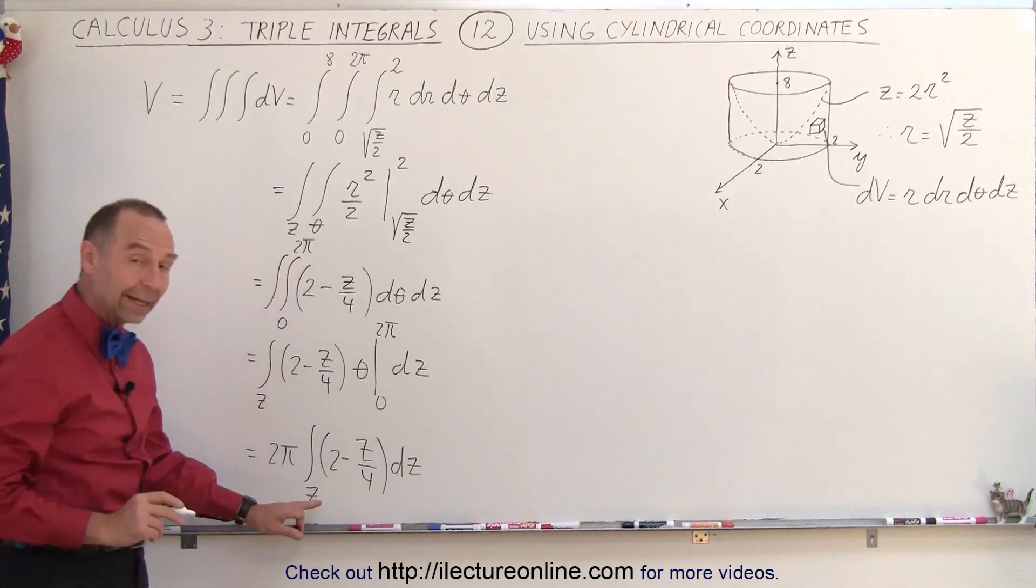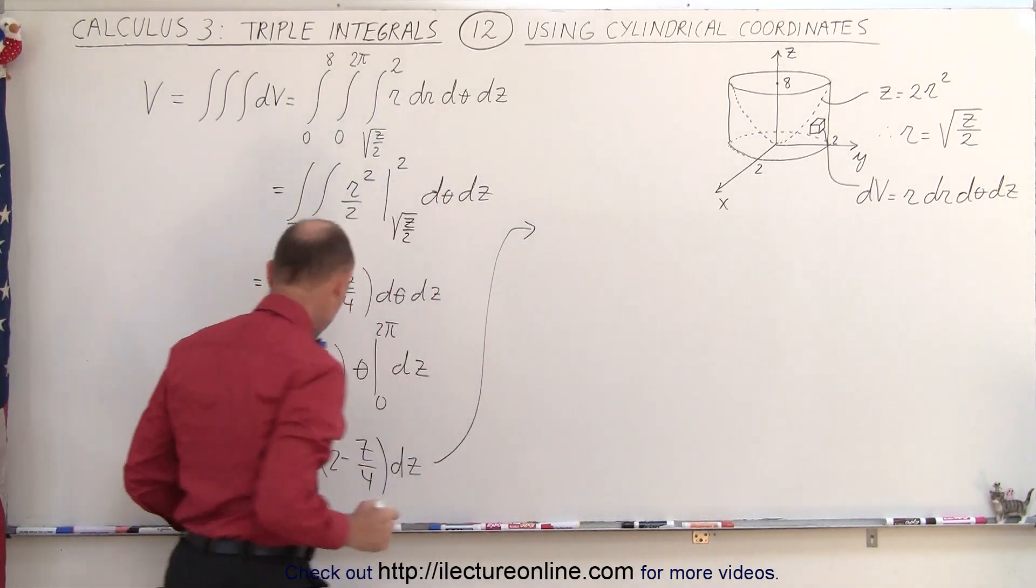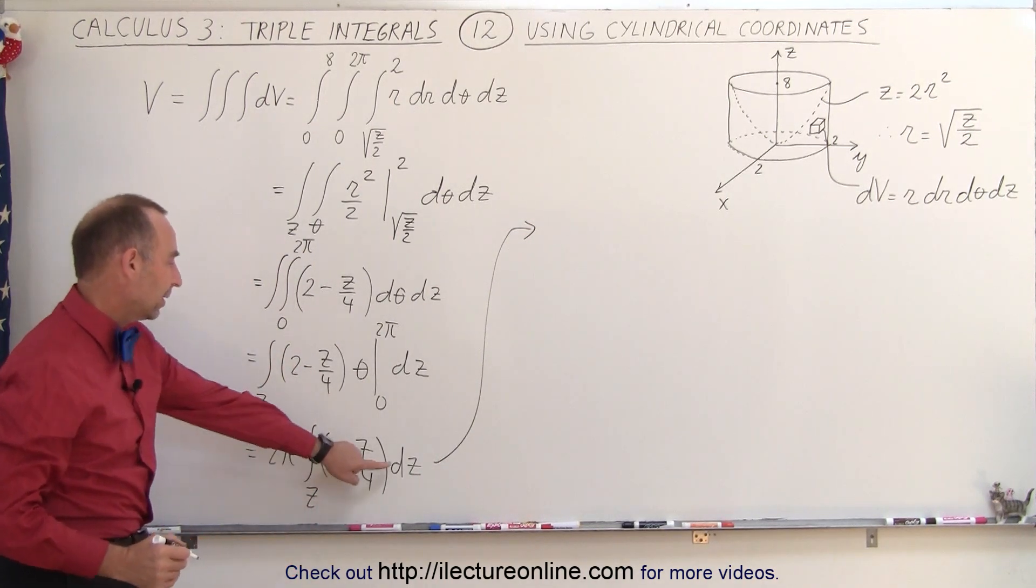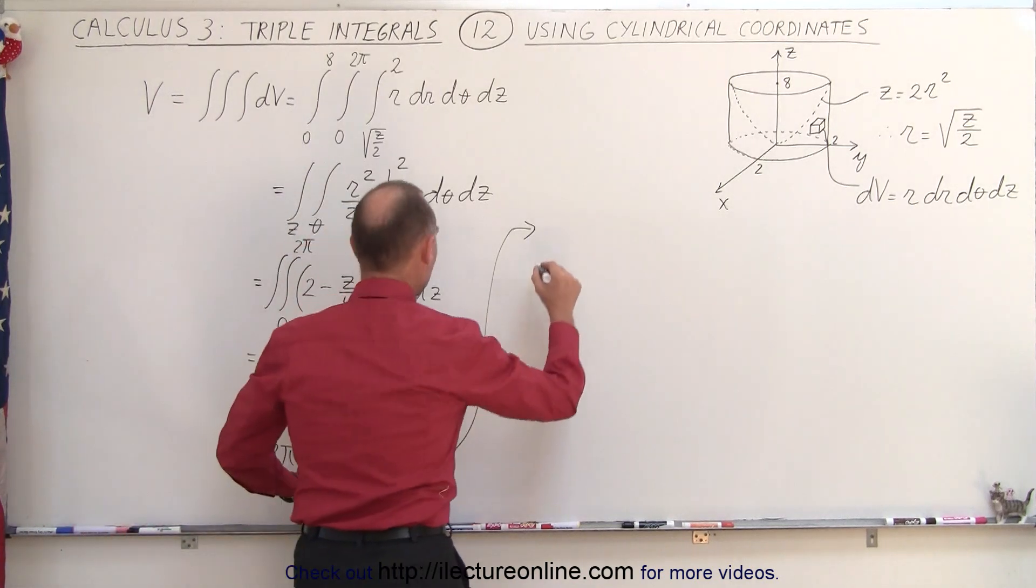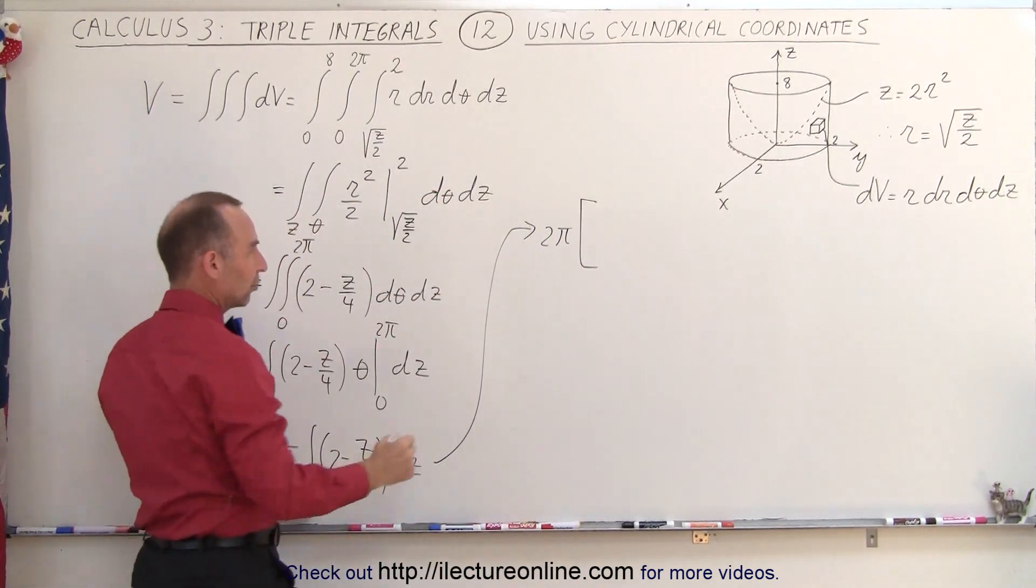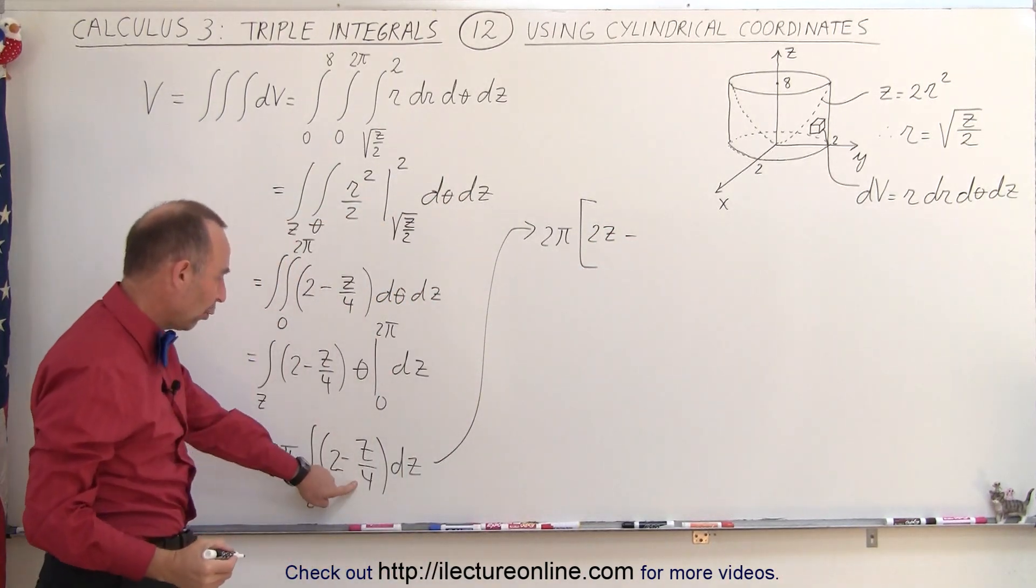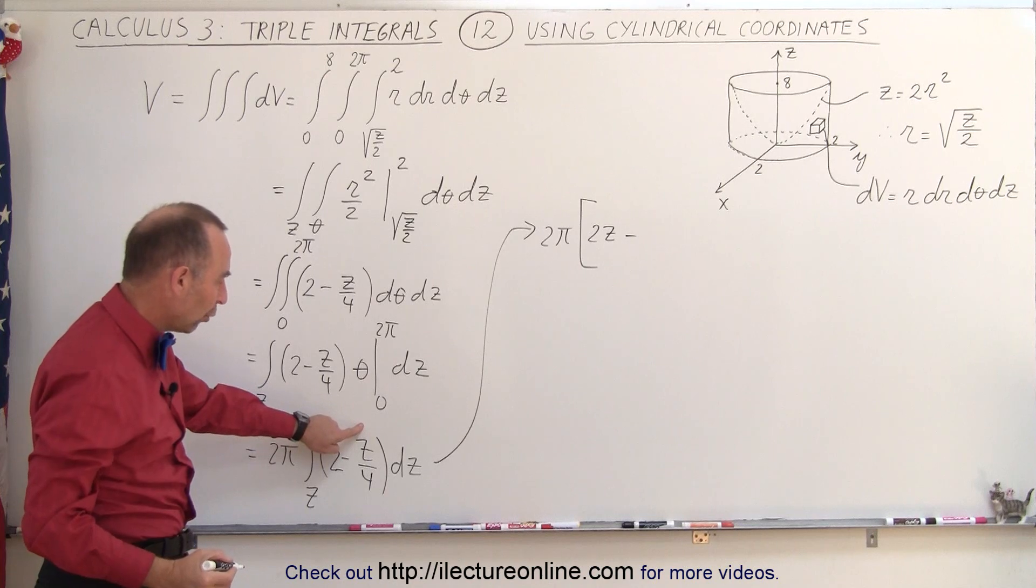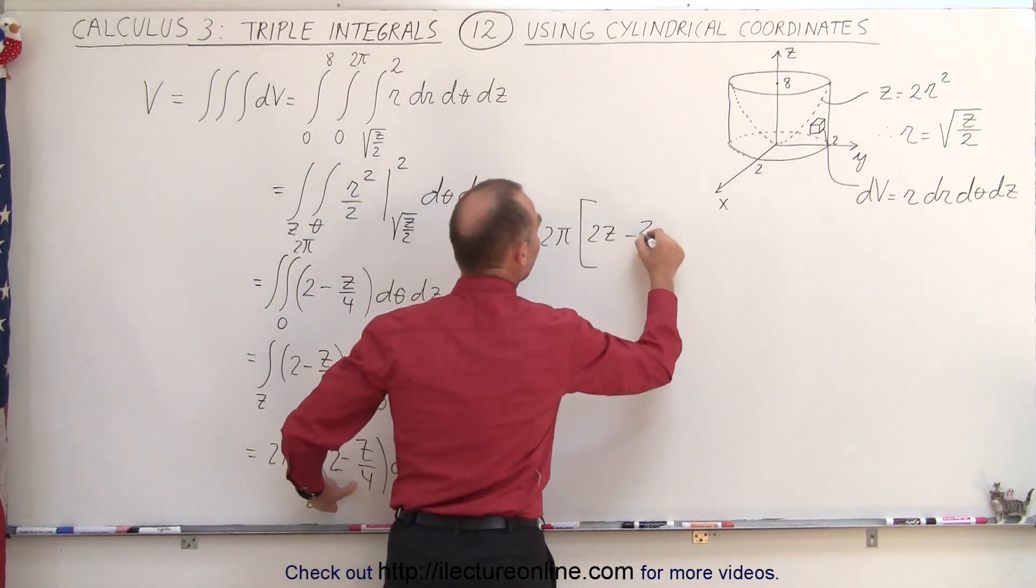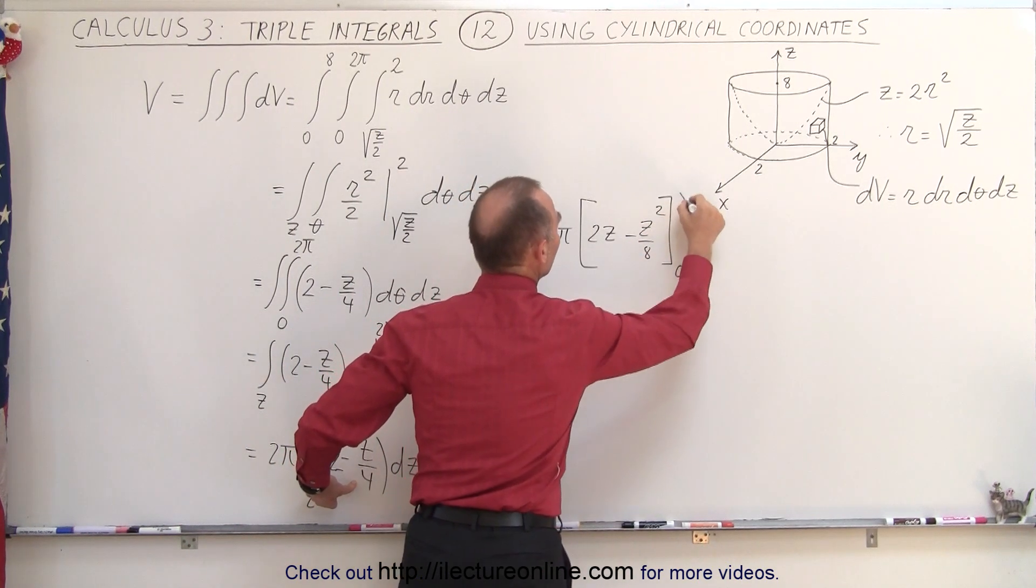So now, we can go ahead and integrate this relative to the variable z. Coming over here, notice this is a 2. So, 2 integrated times dz gives us 2z, so we have 2 pi times 2 becomes 2z, minus, we have z over 4, now that becomes z squared over 8, because we bring the new exponent down, so this is z squared over 8, and evaluate it from 0 to 8.